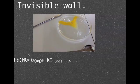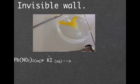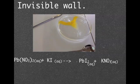Now to form our products, we need to swap over our anions because it's a displacement reaction or a double displacement reaction. So that means we get lead iodide and potassium nitrate.